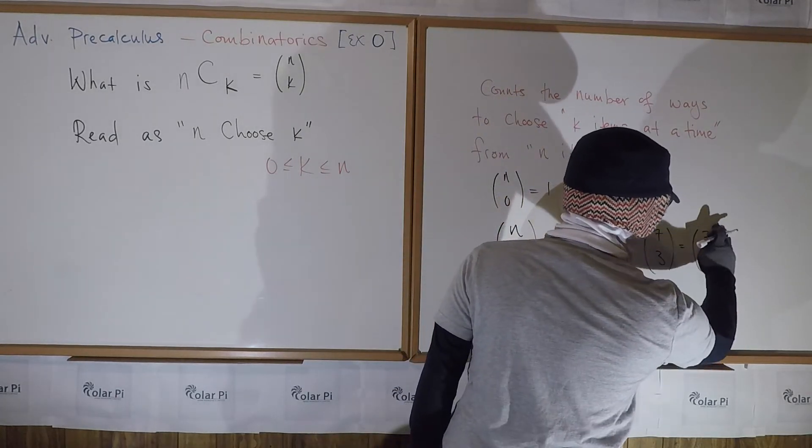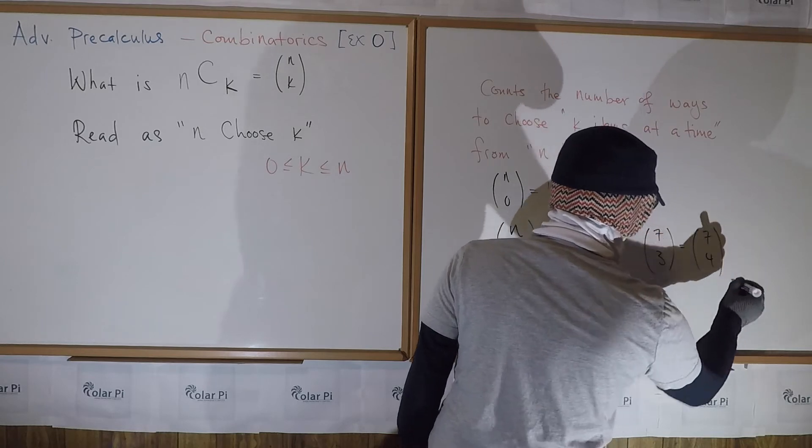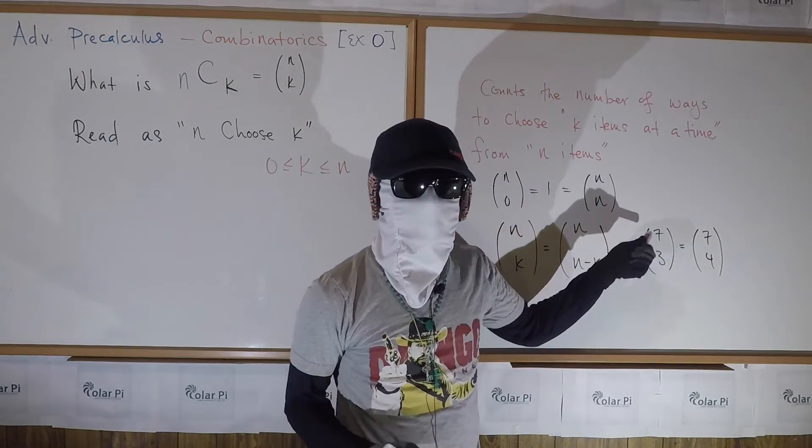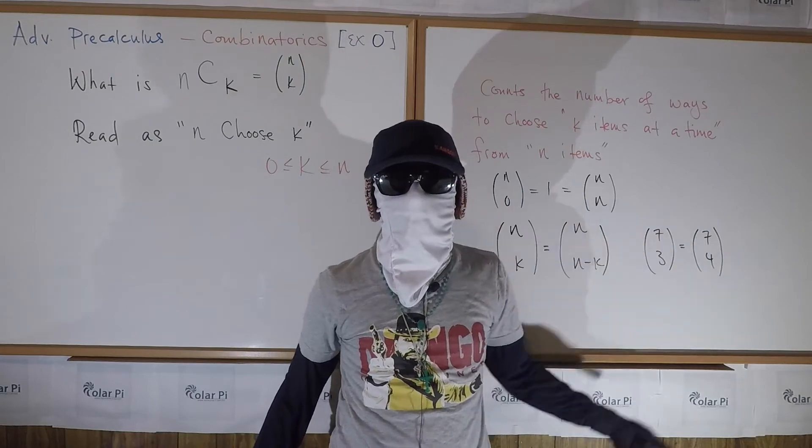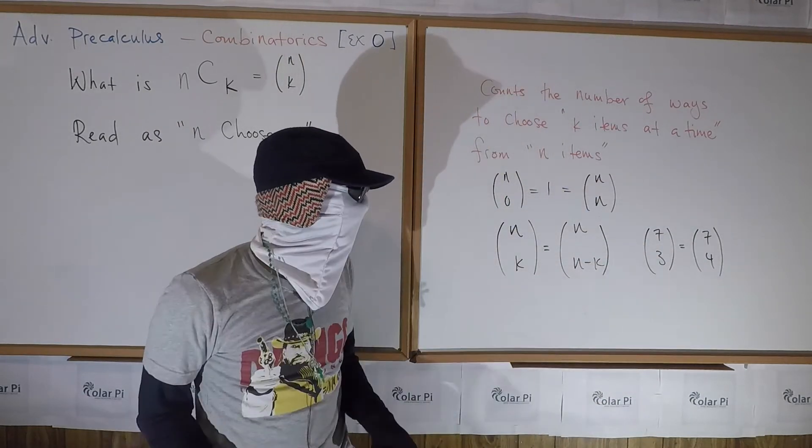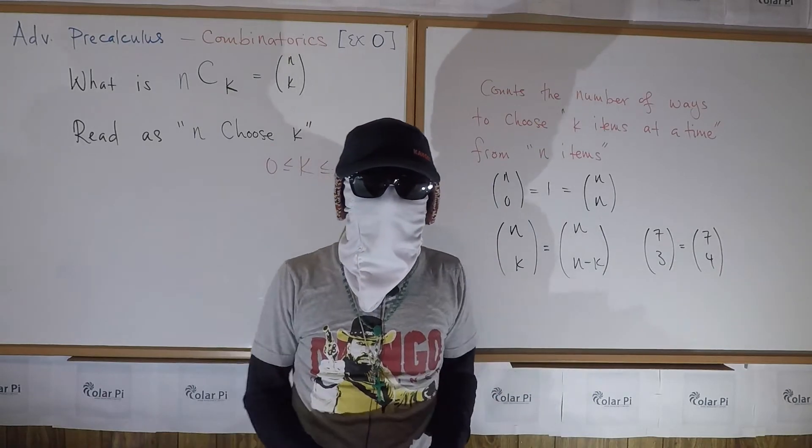It makes intuitive sense because if you're choosing 3 at a time from 7 items, well you're automatically choosing 4 items at a time - the 4 that you're leaving behind. That's why this is true. I hope you get it, and if not, then ask questions in the comment section and I'll be happy to help you.